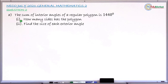This is NECO July 2023 question number 2e. The question reads: the sum of the interior angles of a regular polygon is 1440 degrees. There are two parts: Roman 1, how many sides has the polygon, and Roman 2, find the size of each exterior angle. So let's attempt to answer this question.